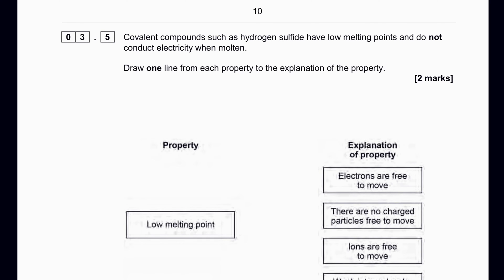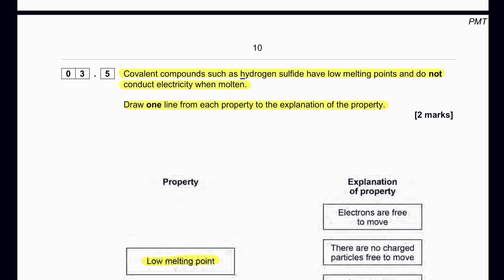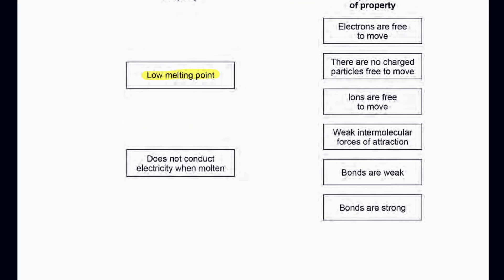Covalent compounds such as hydrogen sulfide have low melting points and do not conduct electricity when molten. Draw one line from each property to its explanation. Low melting point: hydrogen sulfide is a simple molecular covalent compound with very weak intermolecular forces of attraction between molecules. Does not conduct electricity when molten: there are no charged particles free to move — no free ions or free electrons.